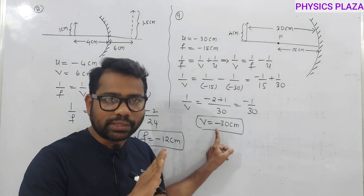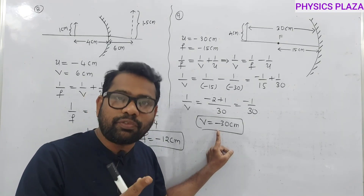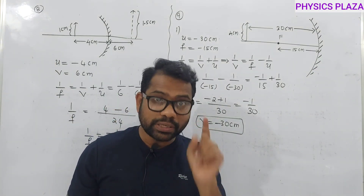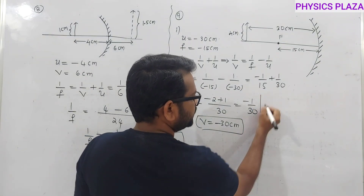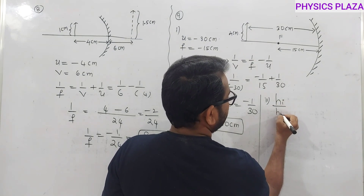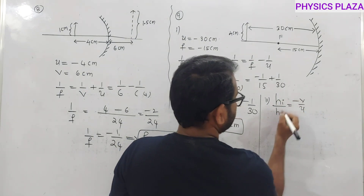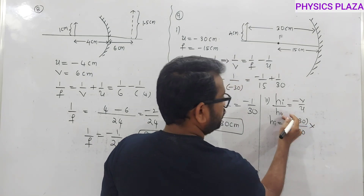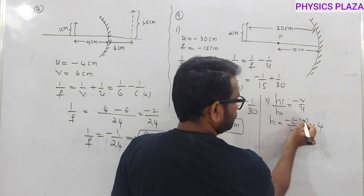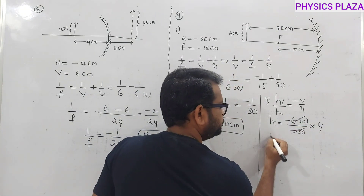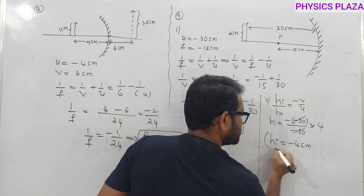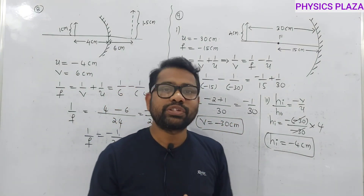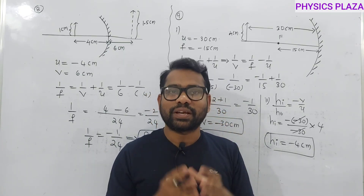Now verify image height: image height = −(v/u) × h₀ = −(−30/−30) × 4 = −1 × 4 = −4 cm. The magnitude is 4 cm — same as the object height. So when an object is placed at the center of curvature, the image also forms at the center of curvature with the same size. The negative sign confirms the real, inverted nature.